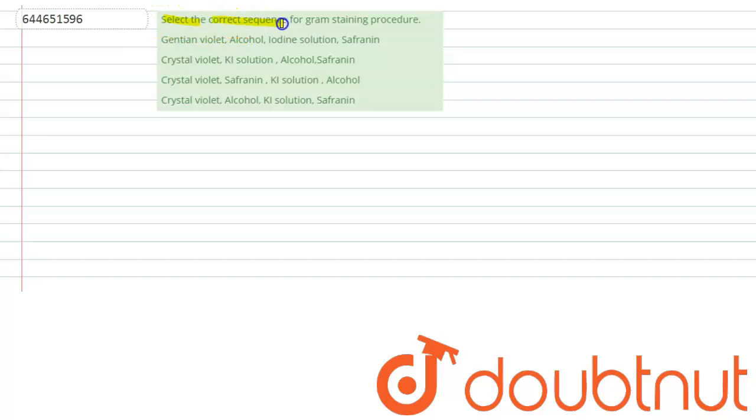Select the correct sequence for the gram staining procedure. These are the options that are given below. In order to differentiate the bacterial species into two groups, the question gives the method that is called gram staining.